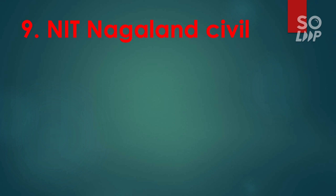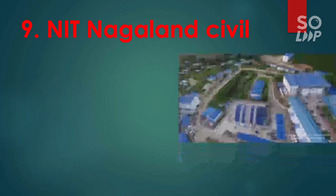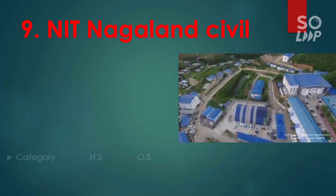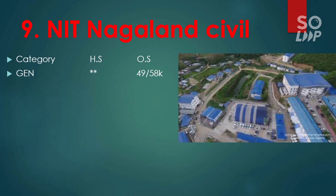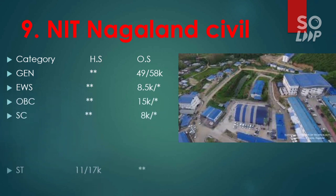The ninth is NIT Nagaland, which also has Civil Engineering with the lowest cutoff. For General other state, it is 49,000 and 58,000. For EWS, it is 58,500. For OBC, it is 15,000. For SC, it is 8,000. For ST, it is 11,000 and 17,000.